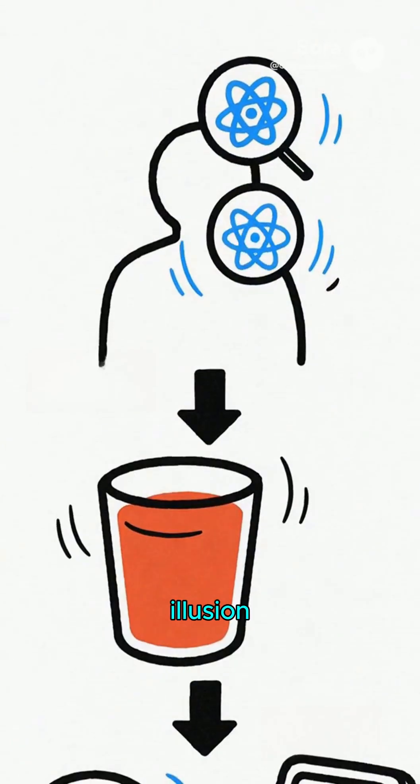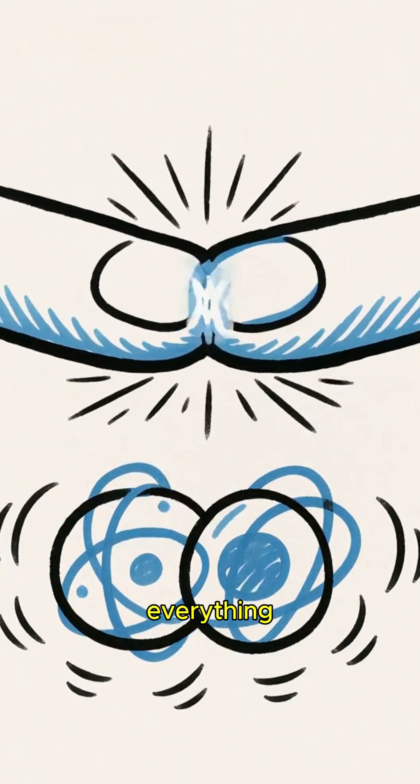The truth is, touch is an illusion created by electromagnetic repulsion. The electrons in your body violently shove away the electrons in everything else.